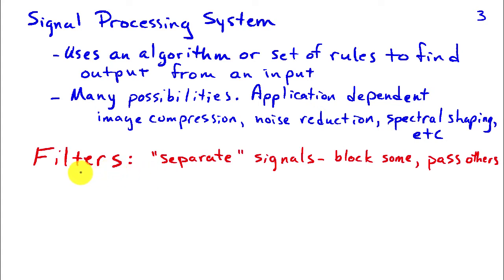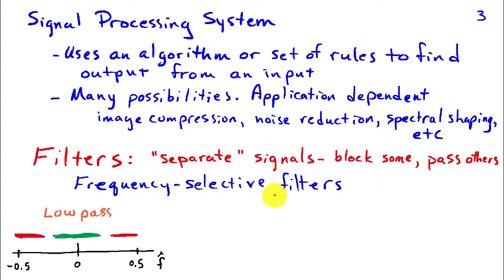One particular example that is very common is the idea of a filter. A filter separates signals - it's going to block some signals and pass others based on some property associated with the signal. Frequency selective filters perform this separation on the basis of frequency. If I have a low-pass filter, that filter is going to pass the low frequencies depicted here in green and attenuate the high frequencies. We're only showing the discrete time frequencies from minus 0.5 to 0.5 cycles per sample because discrete time frequency is not unique outside of this interval.